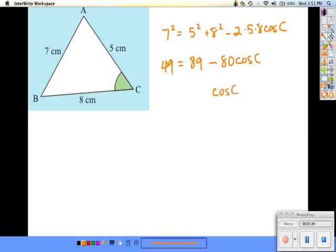So a little manipulation gives us that the cosine of C is one-half. That means that C needs to be 60 degrees.